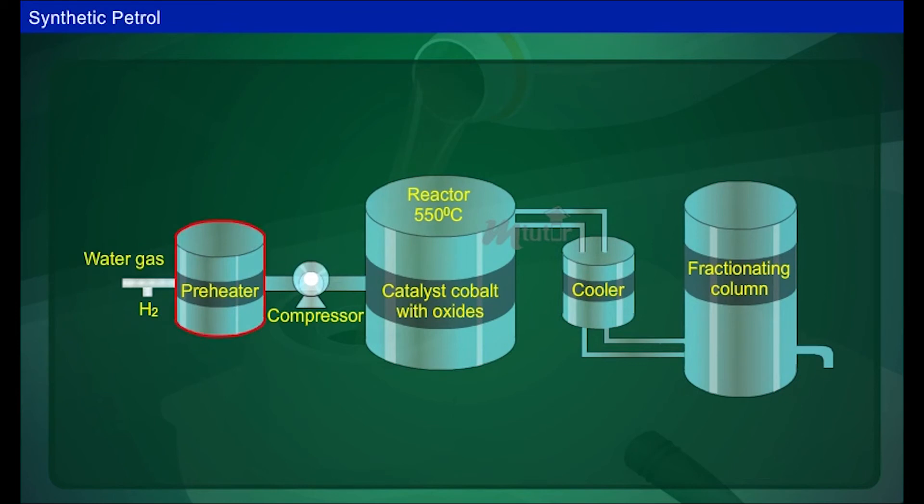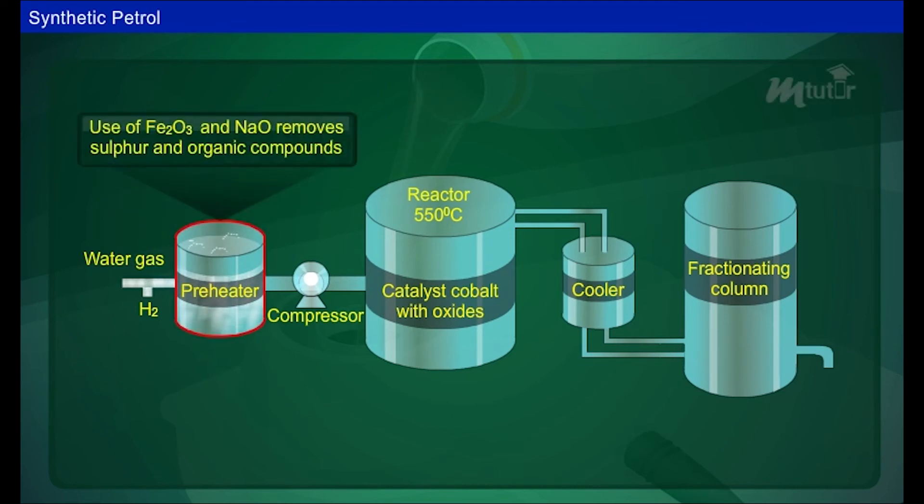The water gas is mixed with hydrogen and the mixture is passed through a chamber containing ferric oxide to remove hydrogen sulfide. Again, this mixture is passed through another chamber containing ferric oxide and sodium oxide to remove sulfur and organic compounds.